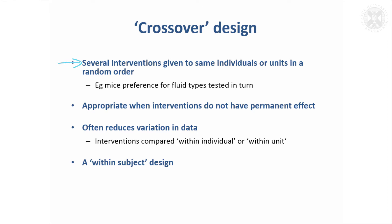It might be that you give the same intervention in time, or it might be that you're studying different parts of the body — right and left — and you can give it at the same time. If we assume we're giving it in time, it has to be an intervention that lasts for a bit, doesn't have a permanent effect, and then you can give another intervention that isn't influenced by the first one. That often reduces variability in the data because we're taking out the between-individual variability and can compare interventions within the individual.